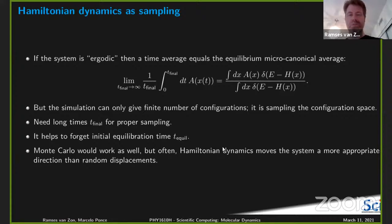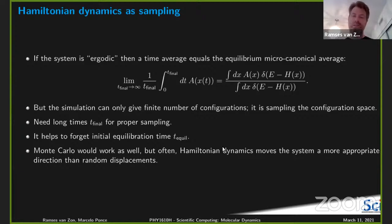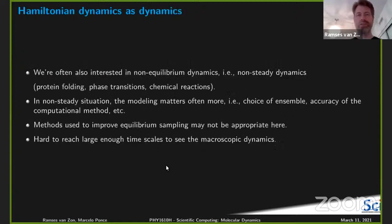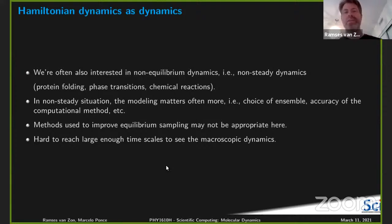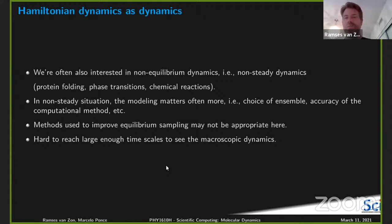And of course, if you ever do want a dynamical process — say you wanted to simulate what happens if you take a container with half of it filled with gas and let it go — then Hamiltonian dynamics makes a bit more sense, and Monte Carlo is a less close approximation to the truth. We often do want to know non-equilibrium dynamics as well. Think of protein folding, chemical reactions, phase transitions. In that case, Hamiltonian dynamics makes a lot of sense — actual dynamics rather than choosing a random step and seeing how it goes.